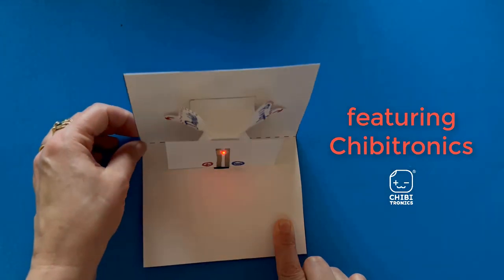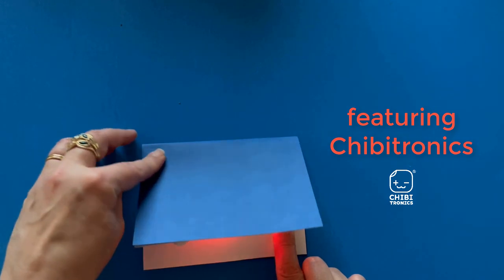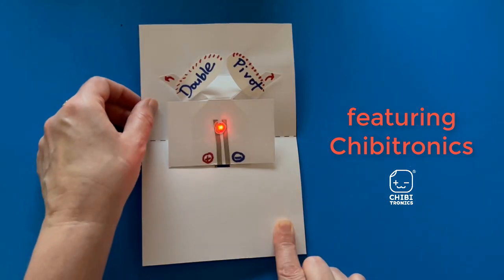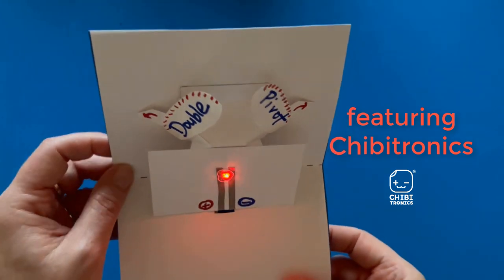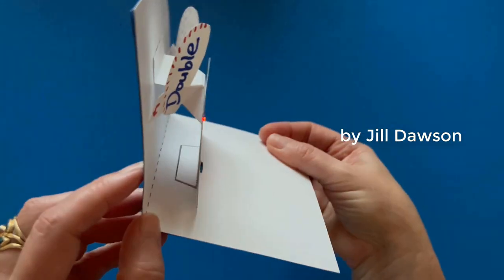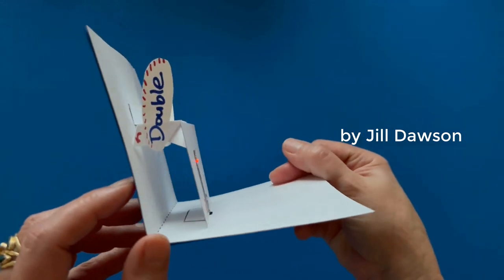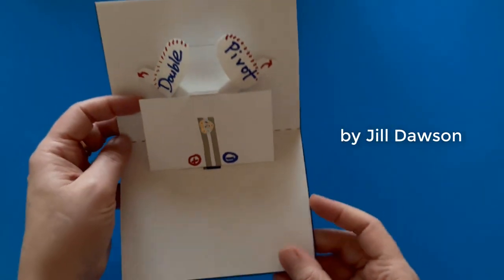The double pivot mechanism features a parallelogram and two folded right angles, which are used to power a pair of moving arms. First I'll show you how to build the mechanism, then I'll show you a way to use it to help tell a story, express a concept, or add meaning to a pop-up scene.